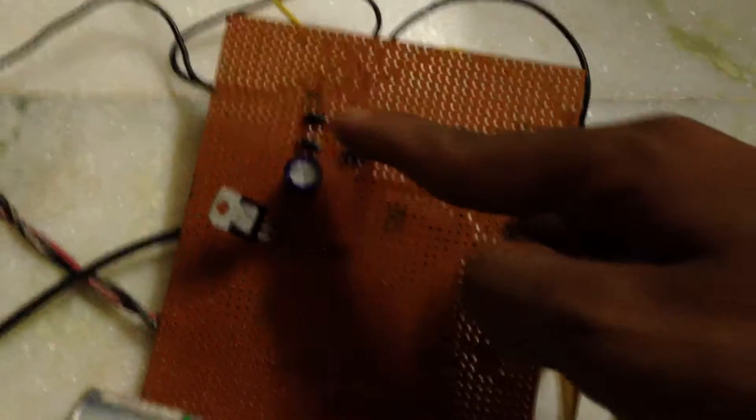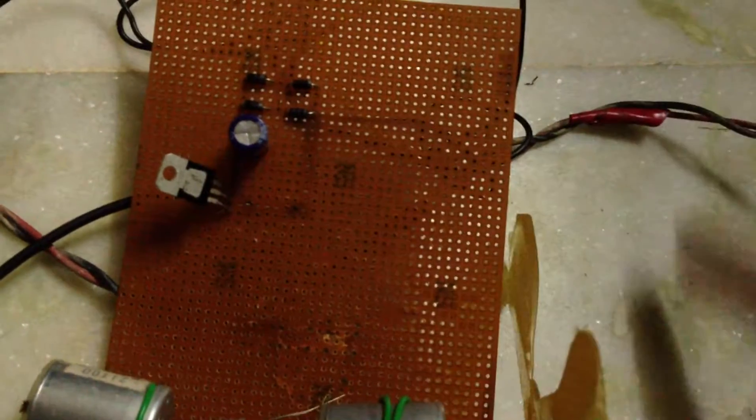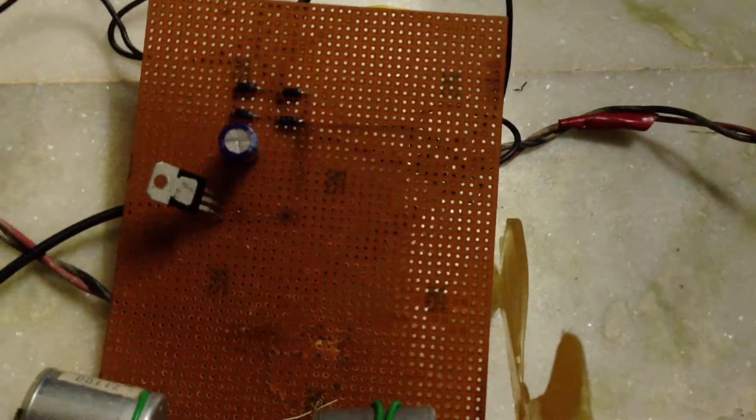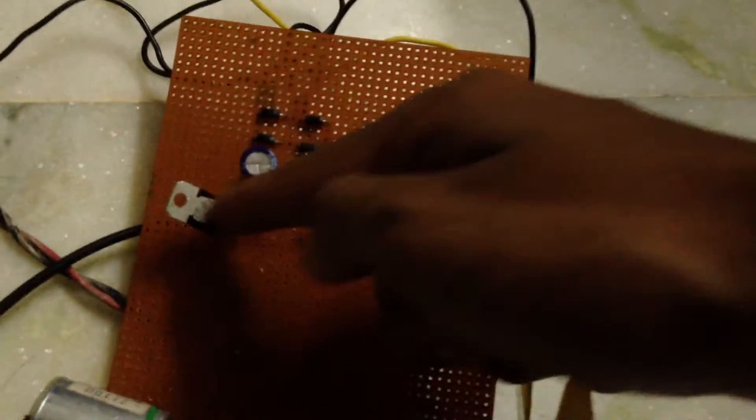Generator is connected to rectifier with the help of underground wires. Now this is 7805 IC. Let's see it in detail.